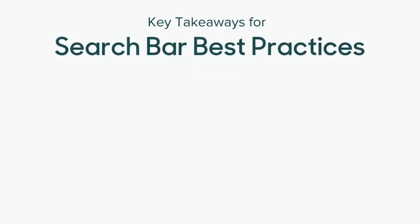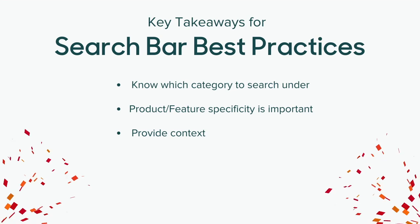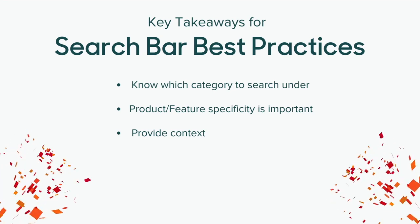Let's review the key takeaways for search bar best practices. Know which category to search under — Documentation or API Reference. Specifying which product or feature you're working with helps guarantee the most relevant results. Provide context — even something as simple as clarifying OAuth or basic auth can really help get you exactly what you need. By sticking to these best search practices, finding what you need should be a breeze.